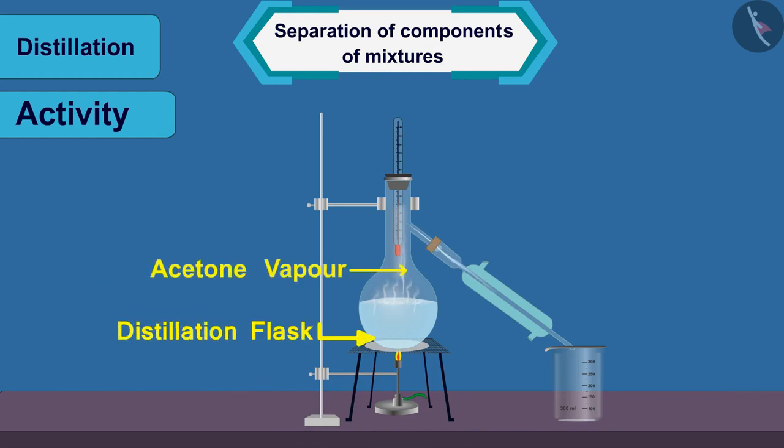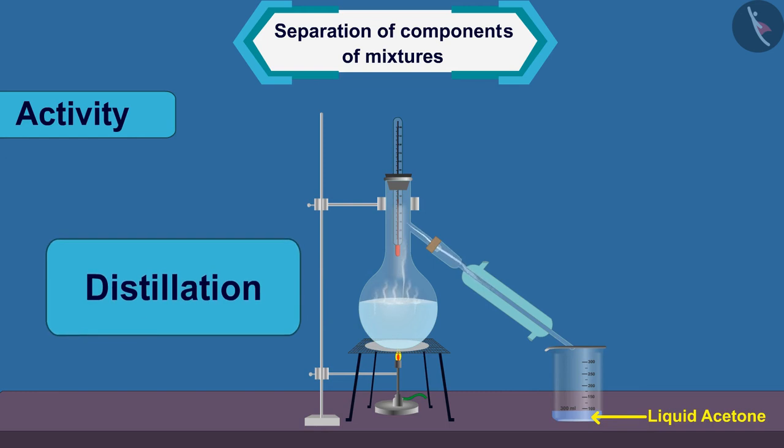This acetone vapour passes through condensation. It starts condensing and again accumulates in the beaker in the liquid phase. In this way, we can separate the mixture of acetone and water by distillation.